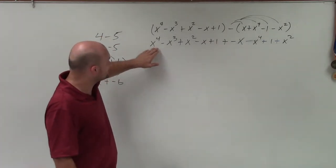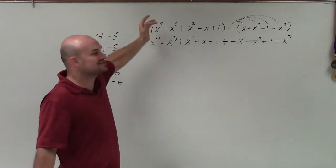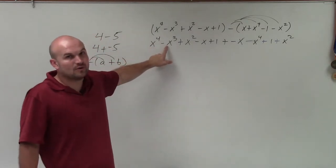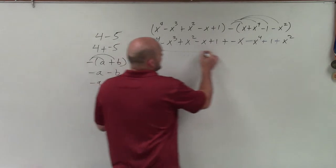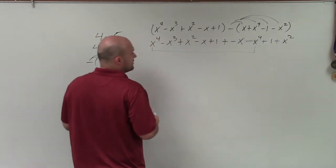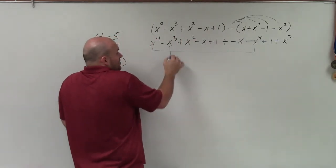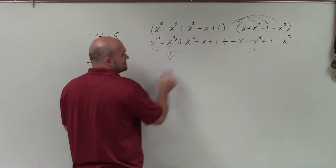Well, I can't divide x to the 4th evenly into x cubed. So therefore, I can only combine x to the 4th with x to the 4th. x cubed here, you can see, does not have anything, right? So we know that's going to be part of our answer.